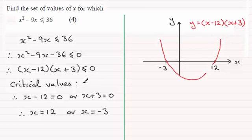Now we're looking for where the y value is less than or equal to zero. And that means that y has to be below the x axis. And that's going to occur in this interval from minus 3 to 12. But because we've got an equal sign here we also need the values of minus 3 and 12.